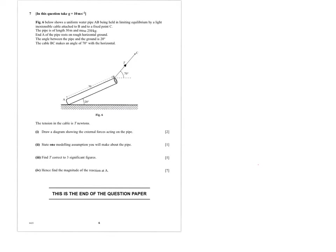In this question from January 2014, we have a uniform water pipe AB being held in limiting equilibrium by a light, inextensible cable attached to B and to a fixed point C. The pipe is of length 30 metres and the mass is 250 kilograms. The end A of the pipe rests on rough, horizontal ground. The angle between the pipe and the ground is 20 degrees, and the cable BC makes an angle of 70 degrees with the horizontal.